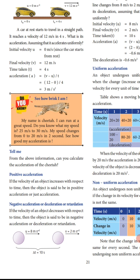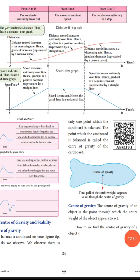Positive acceleration means if the velocity of an object increases with respect to time, the object is said to be in positive acceleration. Negative acceleration or deceleration means if the velocity of an object decreases with respect to time, the object is said to have negative acceleration. Uniform acceleration means an object undergoes uniform acceleration when the change in its velocity for every unit of time is the same. Non-uniform acceleration means the velocity change per unit of time is not the same.